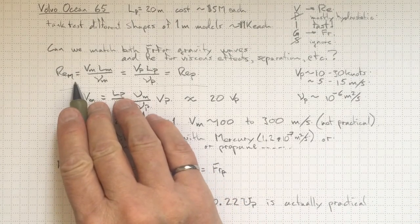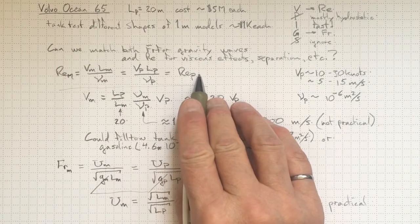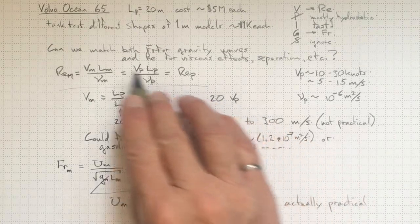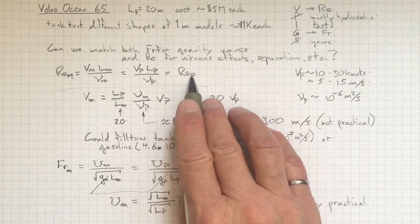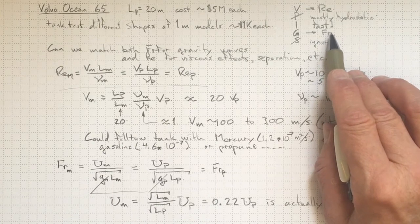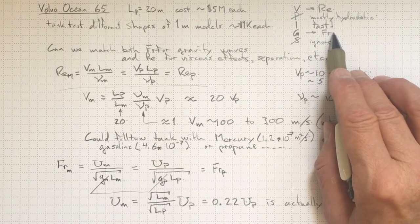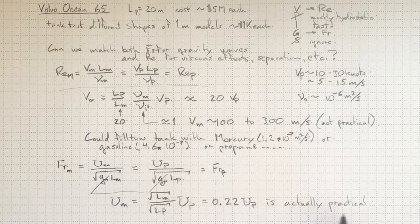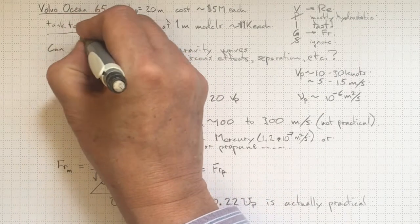So we can't match up the Reynolds number, model, and prototype unless we go to some kind of an exotic and probably quite dangerous fluid. So we're going to be stuck saying the Reynolds number is high and that we're not too worried about the detailed frictional effects. We can make the Froude number the same so that the gravity waves and the wake will be the same. And that's going to be a big factor. Our gravity waves are a lot of what's going to determine the drag on the boat as we're trying to move through the water at high speed.